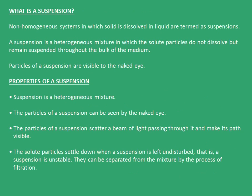Moving forward, what is a suspension? A non-homogeneous system in which solid is dispersed in liquid is termed as a suspension. A suspension is a heterogeneous mixture in which the solid particles do not dissolve but remain suspended throughout the bulk of the medium. Particles of a suspension are visible to the naked eye. Suspension particles scatter a beam of light and make its path visible. The solute particles settle down when a suspension is left undisturbed — that is, a suspension is unstable. They can be separated from the mixture by the process of filtration.